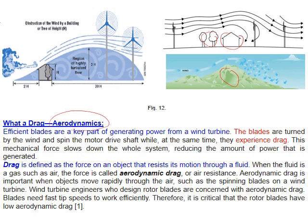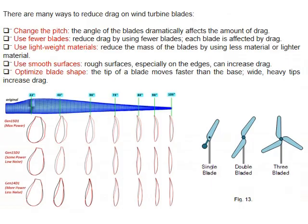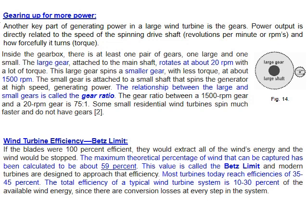When the fluid is air, we call it aerodynamic drag, and it affects wind turbine operation. To reduce drag, we can change the blade pitch, use fewer blades (e.g., one blade instead of three), use lightweight materials, use smooth surfaces, and optimize blade shape. Because wind speed is relatively slow — around 4 m/s — while the generator requires high speed, a gearbox is used: a large gear driving a small gear increases rotational speed to drive the generator efficiently.